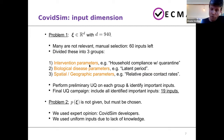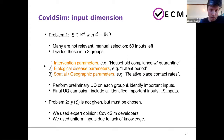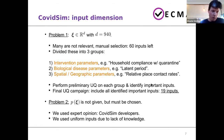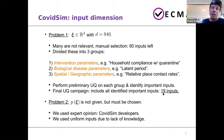The first group was intervention parameters, clearly related to the NPIs. As an example: household compliance with quarantine — what percentage of households will actually comply with quarantine measures? The second type of input is biological in nature, for instance the latent period of the disease. Others were clearly related to the geographical nature of the model. We did a UQ campaign on each group independently to identify which inputs are actually important. After these three UQ campaigns, we pulled all the important parameters together for our final UQ campaign, ending up with 19 inputs.